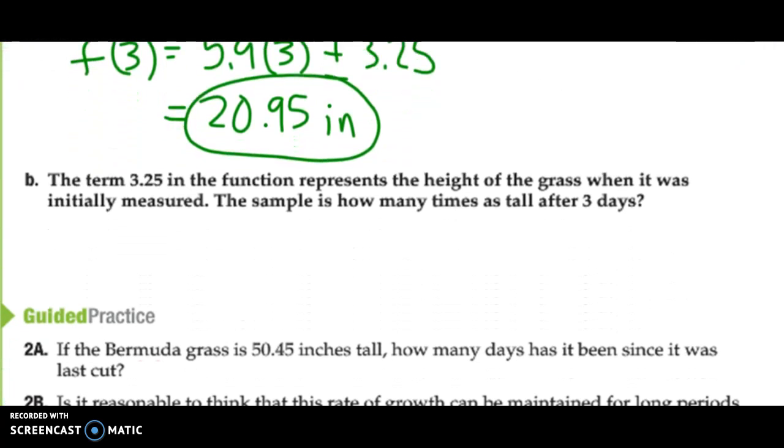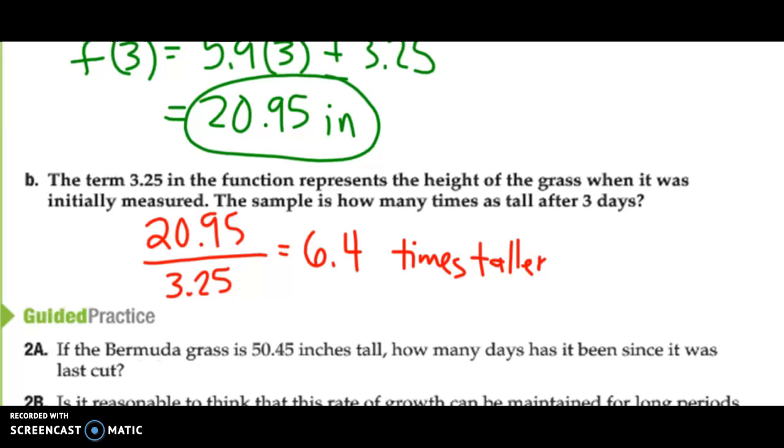The term 3.25 in the function represents the height of the grass when it was initially measured. The sample is how many times as tall after three days? You're trying to figure out how much taller it is. In three days, it's 20.95 inches tall, and originally it was 3.25 inches tall. So how many times bigger is that? It's just a division problem. We divide it out, and it becomes 6.4 times taller.